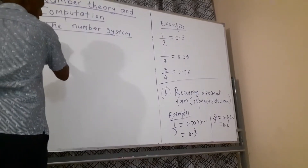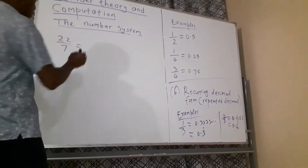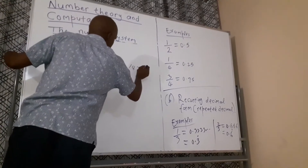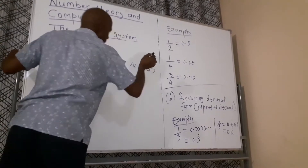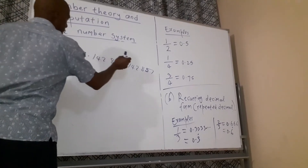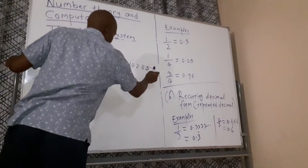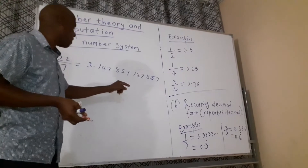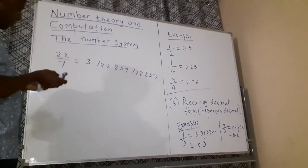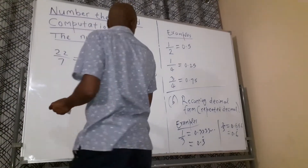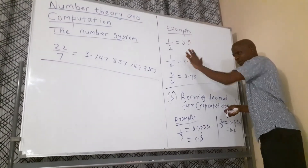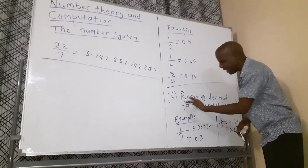Let's also look at 22 over 7. This equals 3.142857142857... and we never stop because it is a repeating decimal — a recurring fraction. You can see that from one point to the next it starts all over, like a period. So that is called a recurring or repeated decimal form, which makes it a rational number.